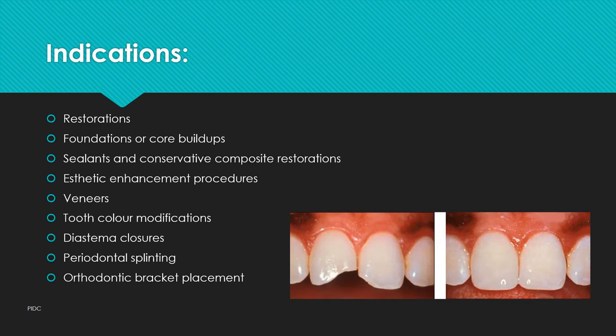Indications: composites are used for all kinds of restorations, foundation or core buildups in root canal treated teeth, pit and fissure sealants, conservative composite preparations for Class 1 and 2, aesthetic enhancement procedures, veneers, tooth color modifications, diastema closure, periodontal splinting, and orthodontic bracket placement. Today in clinics, restoration is mostly based on composite, as amalgam is no longer used and composites are the primary permanent restoration material.